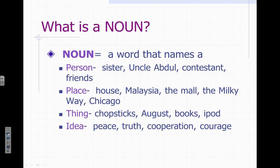Places — same thing. Notice the more general terms are not capitalized. For example, house is a common noun, whereas the country Malaysia is capitalized because it's a very specific place — there's only one. Things are mostly objects and usually very easy to detect. Notice that things also refers to things like months or days of the week, and those are proper nouns.